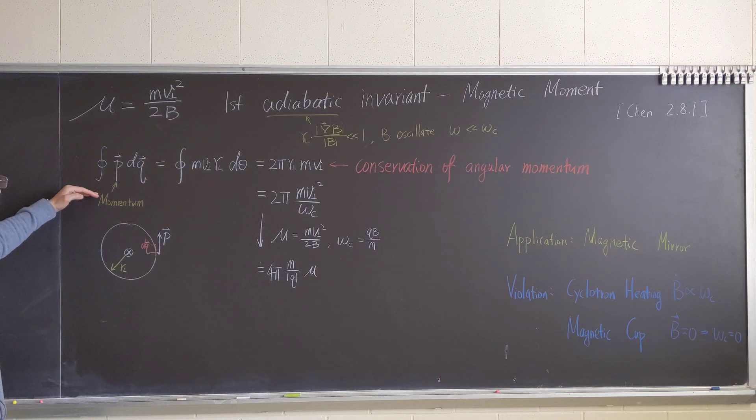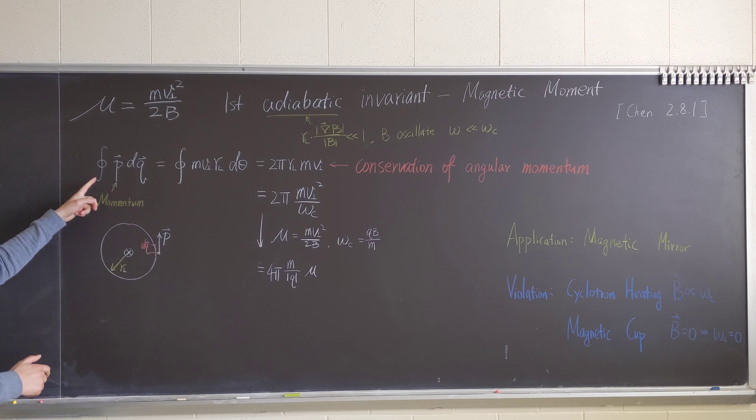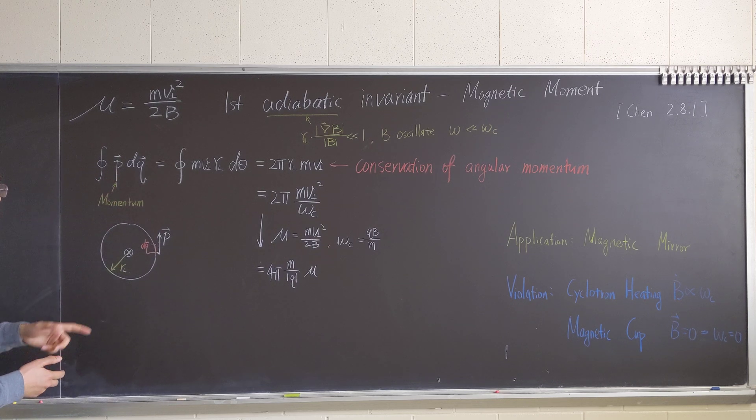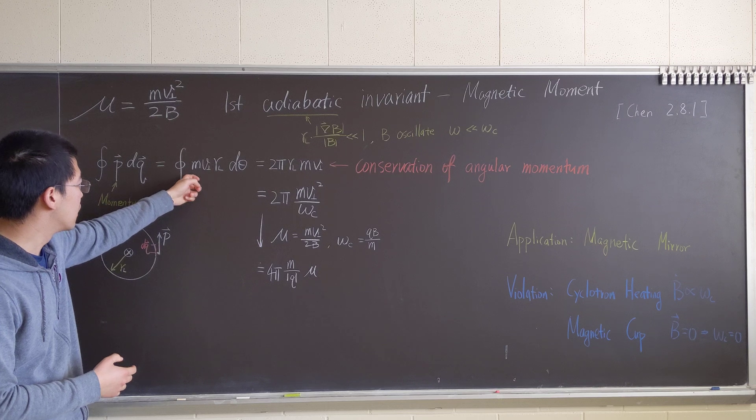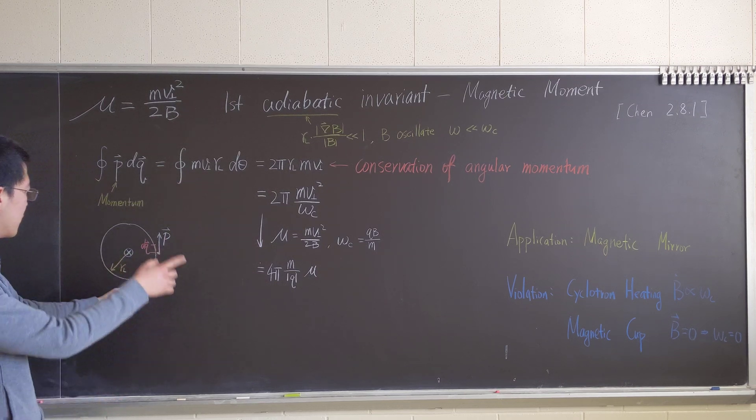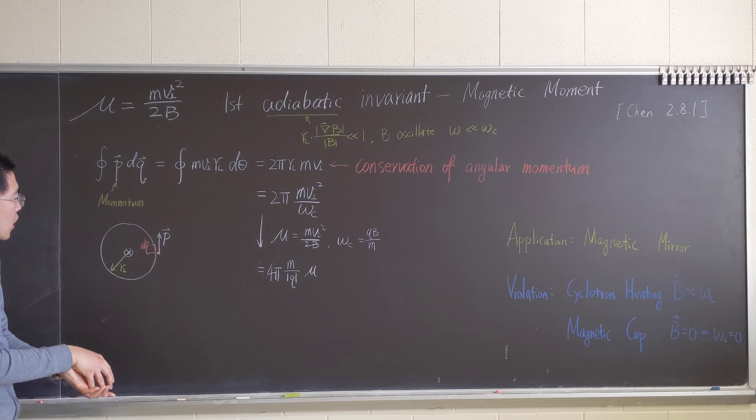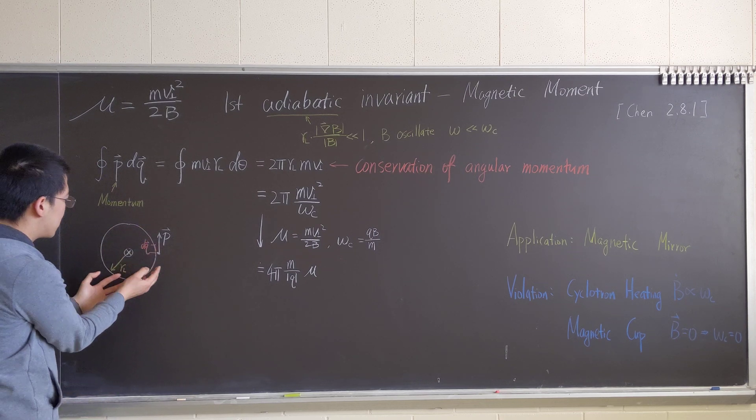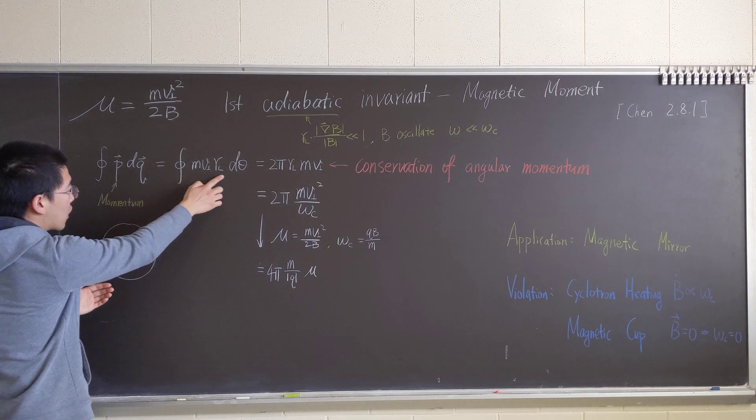We can write a general momentum, and you can try to study that in plasma mechanics. This is p dq, and the momentum can be written in this form: mv perp in the perpendicular area. And dq is the little region like r d theta.